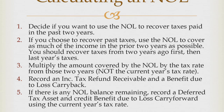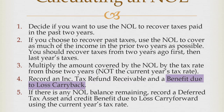The journal entries for carry back and carry forward are slightly different. I record income tax receivable for anything I use on a carry back, and then I record a credit — a benefit due to loss carry back. If there's a net operating loss carry forward, I record a deferred tax asset and credit benefit due to loss carry forward. For the carry forward, I use the current year's tax rate, because I don't know for sure what my tax rate will be in the future. According to GAAP, my best guess is the rate I'm paying right now.